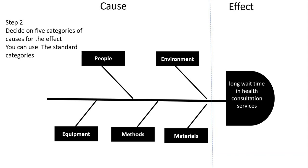Step 2: Decide on 5 categories of causes for the effect. You can use the standard categories: People, Environment, Equipment, Method, and Material.